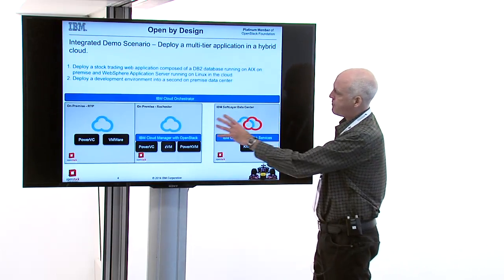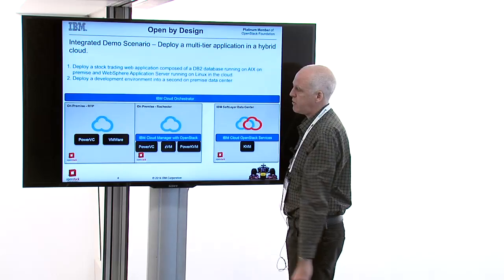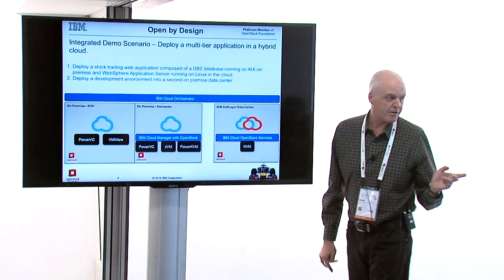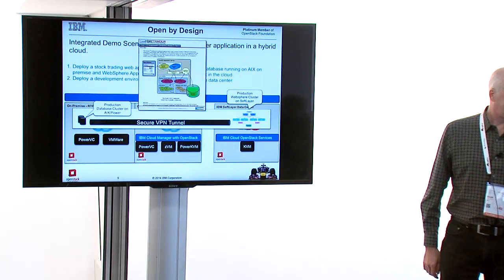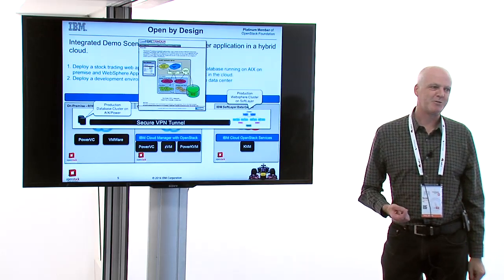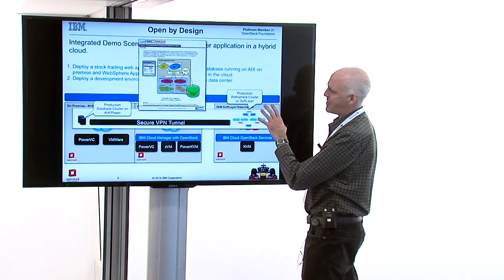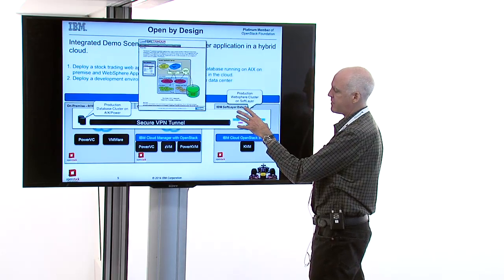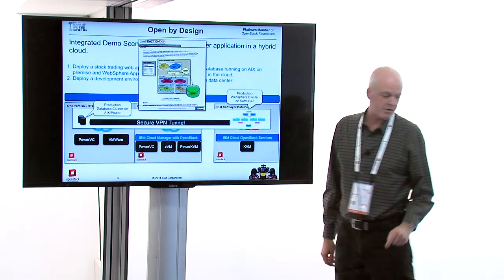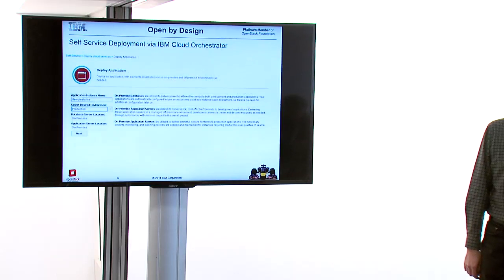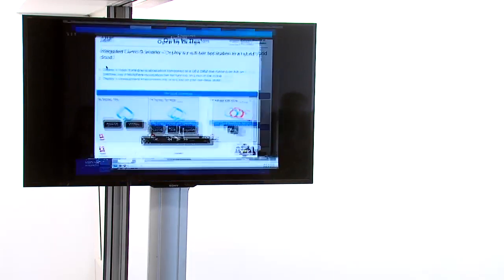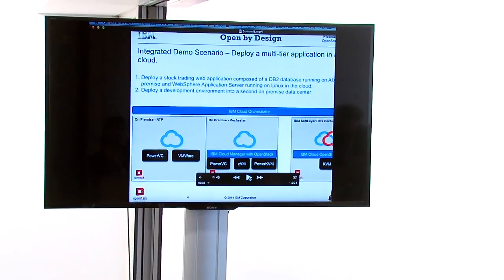Let me describe the demo quickly. We have three different data centers: one on-premise in North Carolina running Cloud Manager with OpenStack that Frank spoke about earlier, and the SoftLayer-hosted site. We're going to deploy an application called 'Day Trader' — for some reason example applications always happen to be stock trading applications — in hybrid mode: the application server cluster hosted on our SoftLayer site, and the database cluster on an on-premise site. This demo is recorded — we didn't want to risk it not working given the flaky Wi-Fi here.